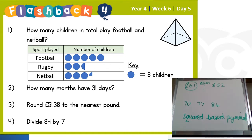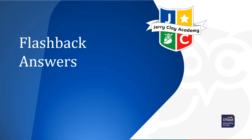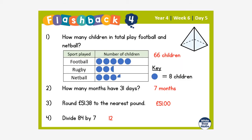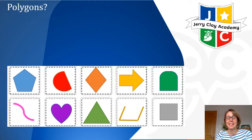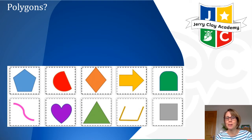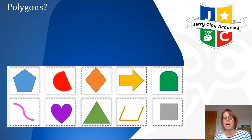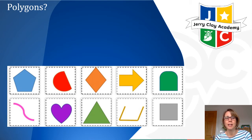Well done everybody. So today we're learning about triangles. Yesterday we mentioned polygons — I've got some pictures of shapes here, some are polygons and some are not. Can you remember what a polygon is and which of these shapes qualify? Pause the video and have a little think about which ones are polygons and which ones are not.